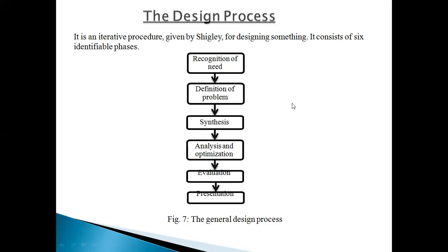After optimization, go for evaluation — check again if it is okay after optimization. If it is okay, go for the presentation of your final design. This is the general design process to design any new part, new component, new system, or machine. These are the basic concepts of CAD and the importance of CAD in your design process. In the next lecture, we go for a new study.